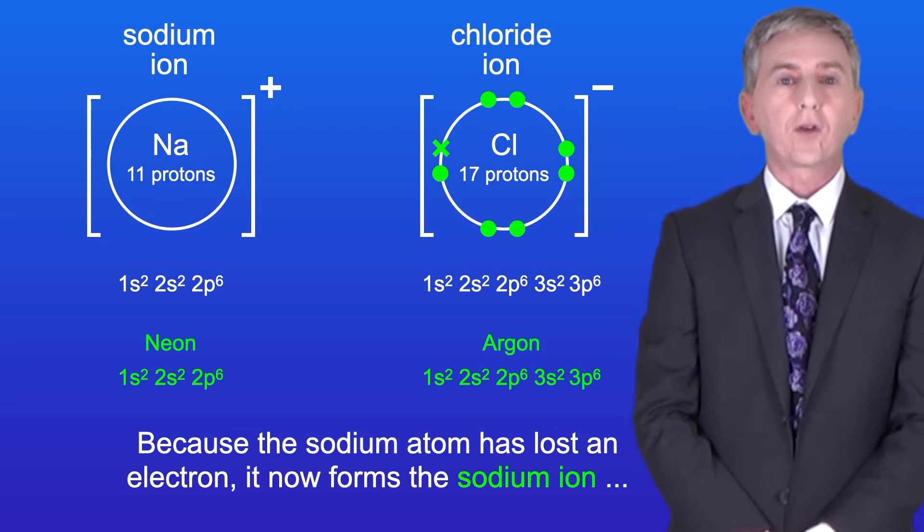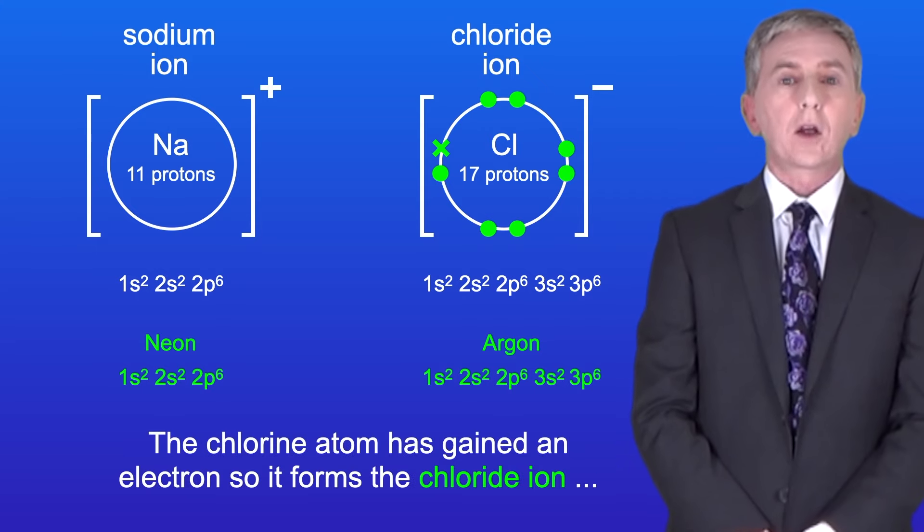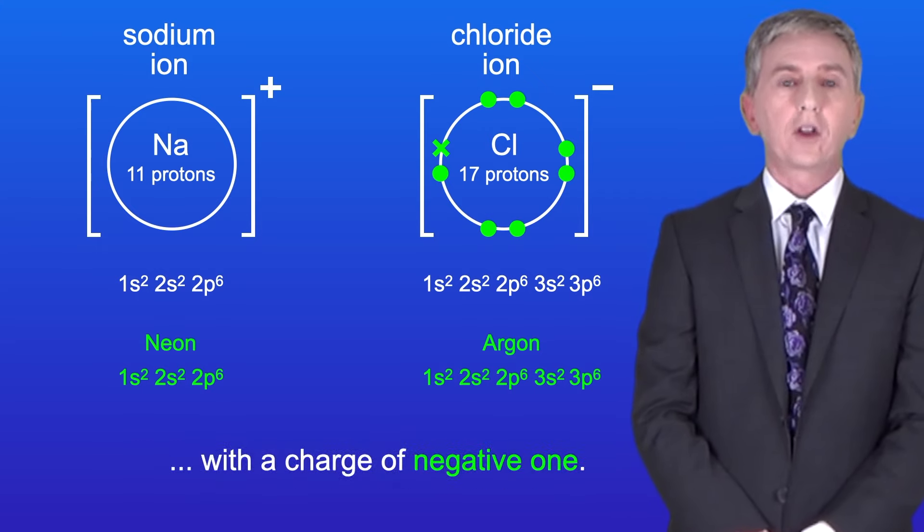Because the sodium atom has lost an electron, it now forms this sodium ion which has a charge of positive 1. The chlorine atom has gained an electron, so it forms the chloride ion with a charge of negative 1.